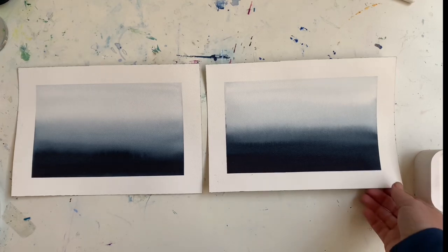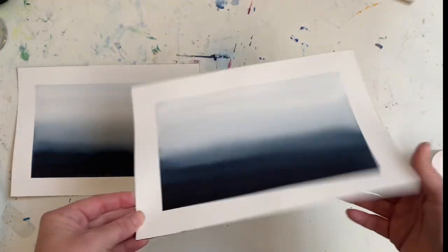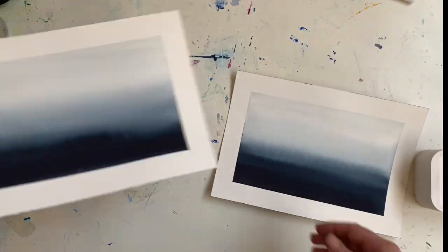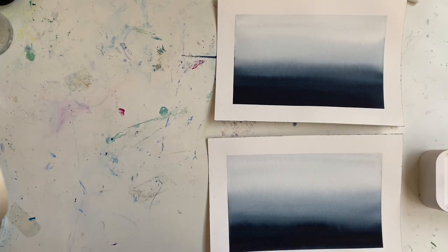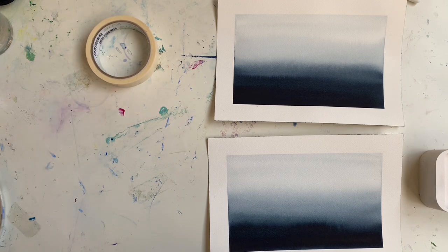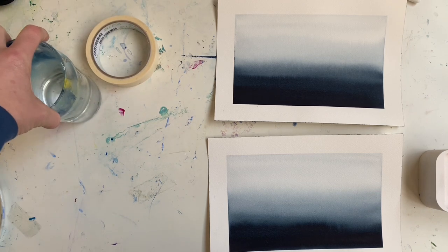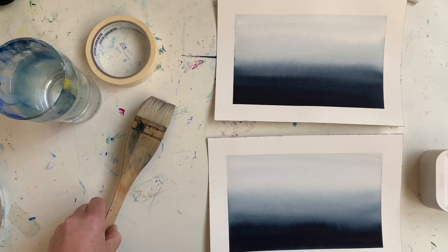I've got two paintings here, both need flattening as you can see the paper's warped. So what I'm going to do now is show you everything you need. You need some tape and a glass of clean water, you need a big brush, a big clean brush.